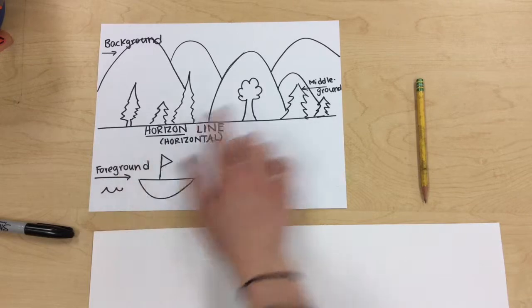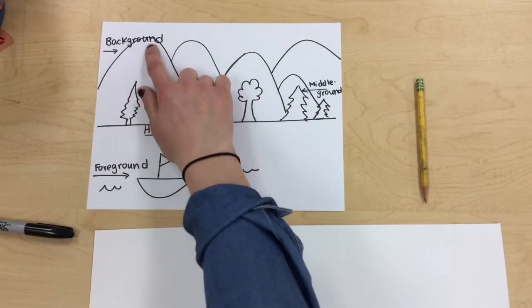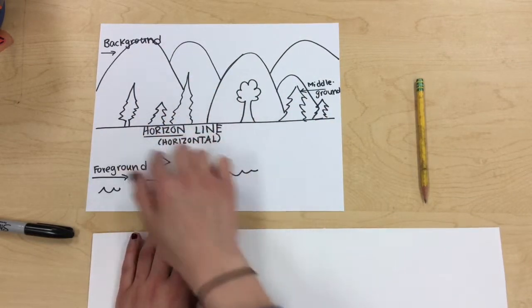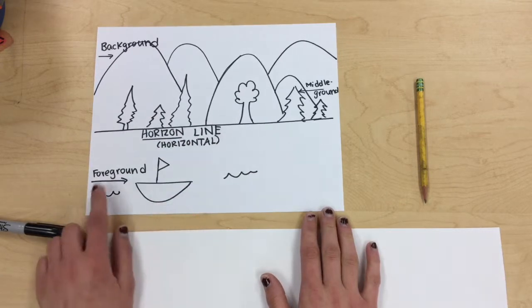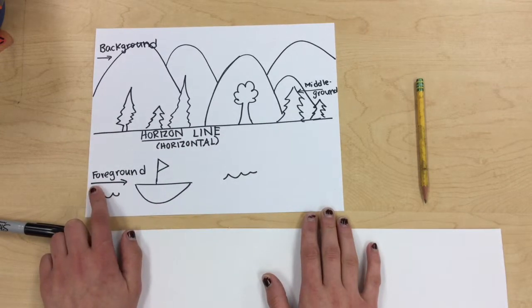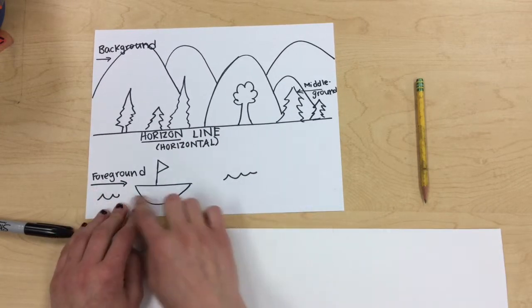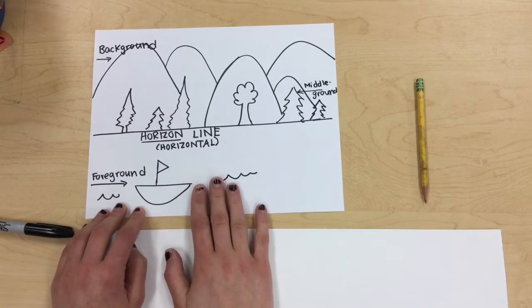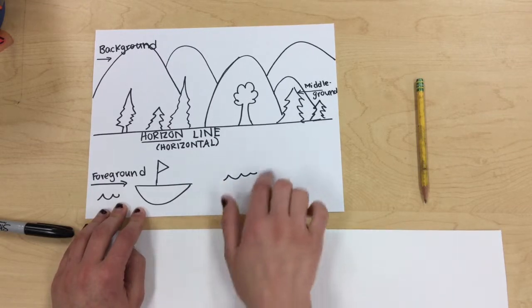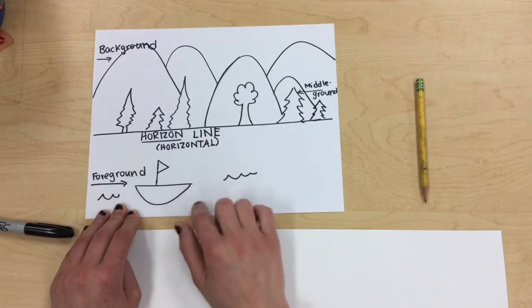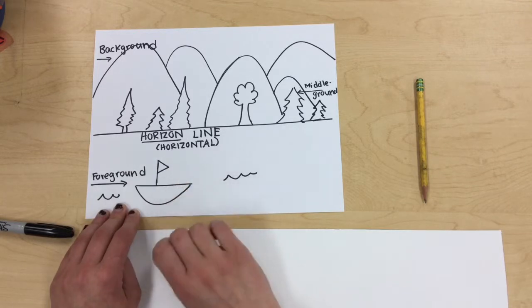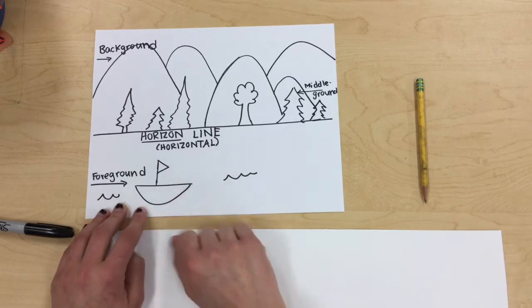We talked about our foreground, our middle ground, and our background and the horizon line of our artwork. So foreground means it's in the front. They both start with F and the foreground of your artwork are the things or the objects that are closest to you. So in this landscape, this boat would be closest to us, that's why it is towards us or closer to us.